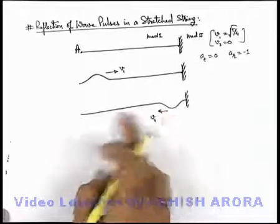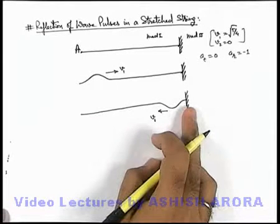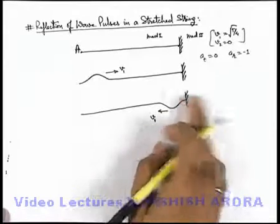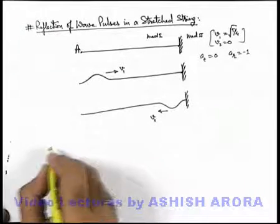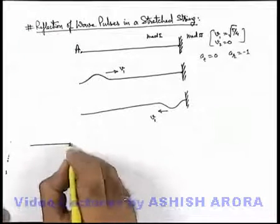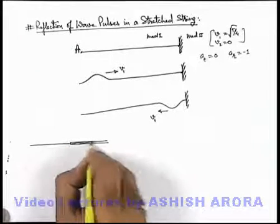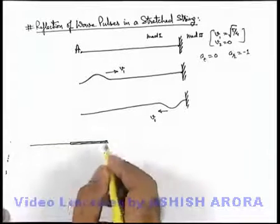It will be reflected in the reverse fashion and will be propagating with the same speed v1. This is the way how the wave is reflected from the clamped end of the string on the wall. A similar situation might occur when instead of wall there is a heavy string connected. Say we are given a situation that there is a string which is connected with a heavy string and these two are clamped at the other ends.